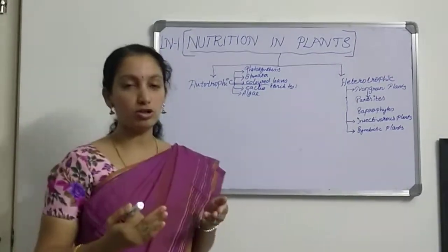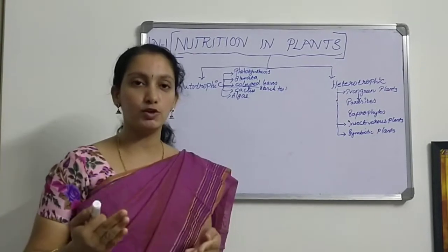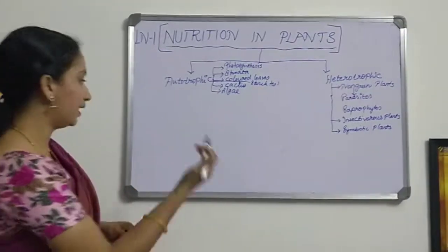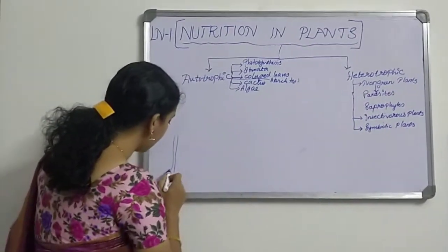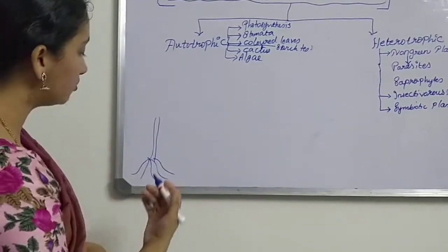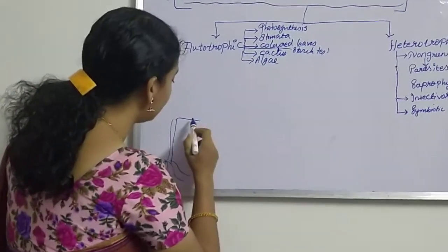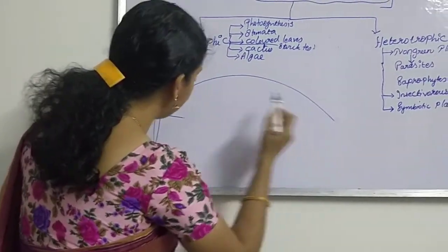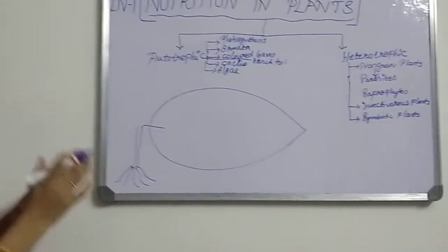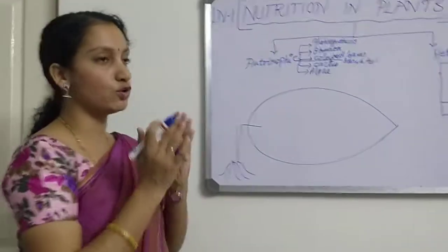We will see how this Autotrophic mode of Nutrition happens and how a Green Plant produces food by this process. I will draw one diagram to explain. If this is the stem part, there are roots under the ground to absorb nutrients and water to the plant, and here we have a leaf. I am drawing a big leaf to show the raw materials required to produce food and the products formed after photosynthesis.